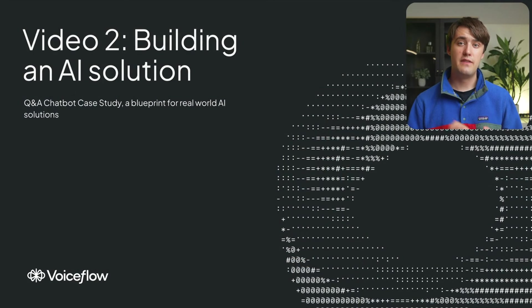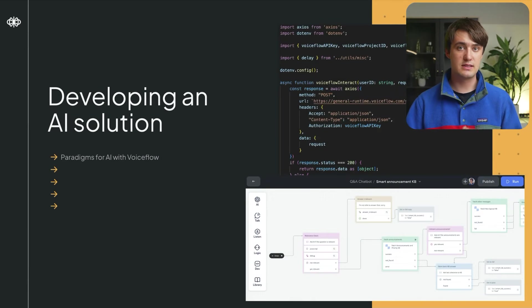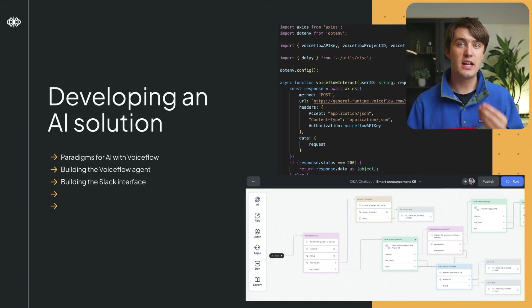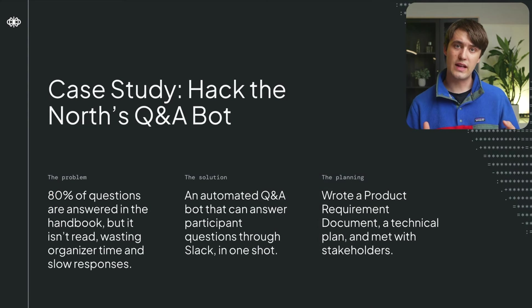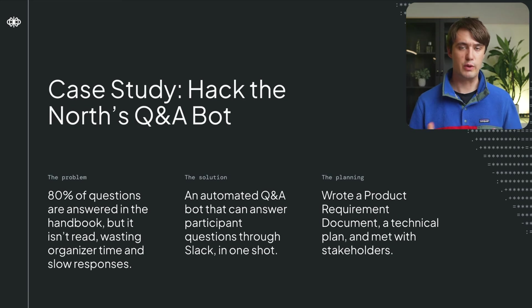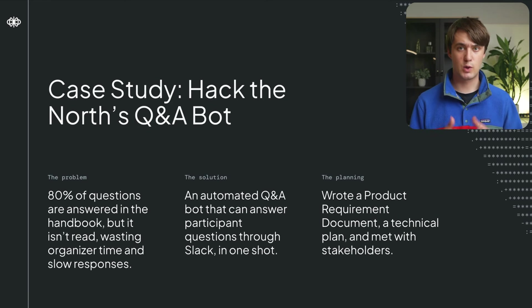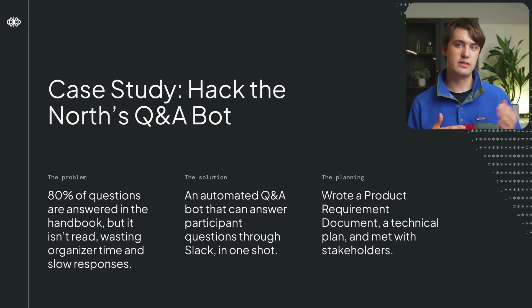This video looks at the second phase: developing the actual code for your solution. I'll walk you through the paradigms custom AI solutions built on VoiceFlow usually follow, the process of building the actual VoiceFlow agent and the Slack bot, taking a look at some of its code. Then we'll look at some challenges we encountered and how we dealt with them, finishing with an in-depth look at the code and setup for some of the most important features. Here's a quick run-through of the case study so far.